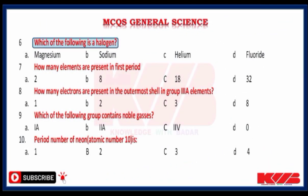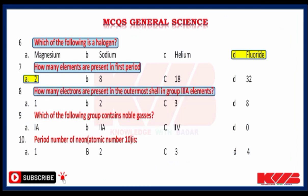Which of the following is a halogen? Magnesium, Sodium, Helium or Fluoride? Yes, Fluoride. How many elements are present in the first period? 2, 8, 18 or 32? Yes, 2. How many electrons are present in the outermost shell in group 3a elements? 1, 2, 3 or 8? Yes, 3.